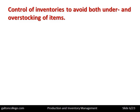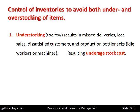Control of inventory is to avoid both under and over stocking of items. Let's look at understocking — this means too few of the item. This results in missed deliveries, lost sales, dissatisfied customers, production bottlenecks, and idle workers or machines. The term used here is underage stock cost. When too few items are in stores, dissatisfied customers means loss of sales and damage to the reputation of the business, but it also means that some workers and machines will be idle waiting for deliveries. So there are costs associated with having too few items in the stores.